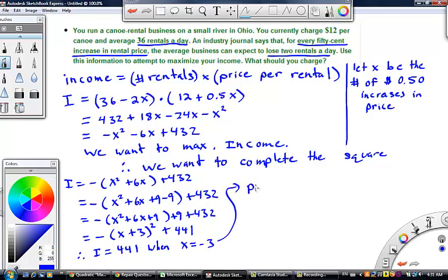The price should be equal to 12 plus 0.5x. Well in order to get the maximum income of 441 we need x to be negative 3. So we're going to actually plug in negative 3 for x and we'll get 12 minus 1.5. So the price that you should charge is 10 dollars and 50 cents.